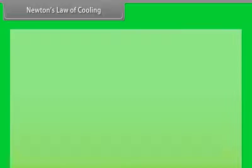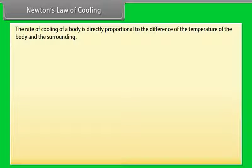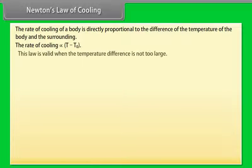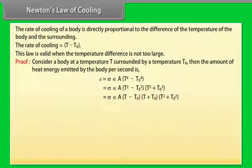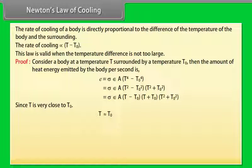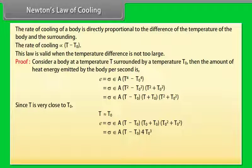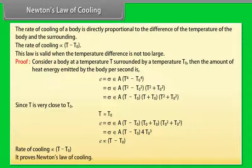Newton's law of cooling states that the rate of cooling of a body is directly proportional to the difference between the temperature of the body and its surroundings: rate of cooling ∝ (T − T₀). This law is valid when the temperature difference is not too large. For a body at temperature T surrounded by temperature T₀, the heat energy emitted per second is E = σεA(T − T₀)(T + T₀)(T² + T₀²). Since T is very close to T₀, E ∝ (T − T₀), proving Newton's law of cooling.